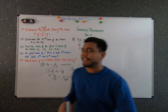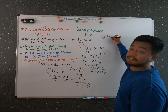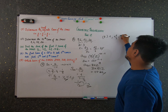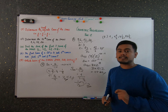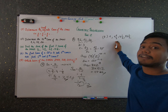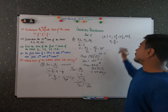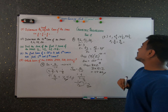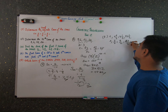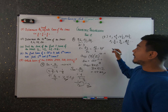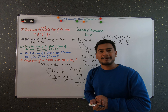Now let's do the third problem: find the sum of the first seven terms of the series 1½, 4½, 13½, and so on. Since these are mixed fractions, let's convert them to improper fractions: 1½ = 3/2, 4½ = 9/2, 13½ = 27/2. Whenever you have mixed fractions in a sequence, convert to improper fractions first.